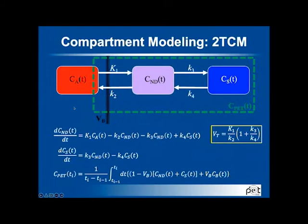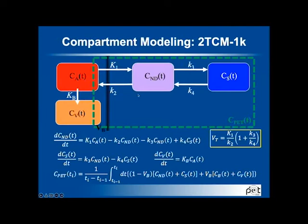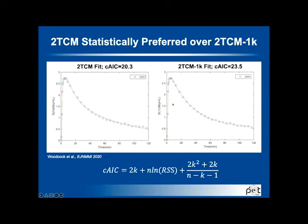Some groups have advocated for adding a further vascular compartment to account for endothelial expression of TSPO. We've done analyses with both the full two-tissue model and the two-tissue model with an extra compartment for irreversible uptake. Using statistical methods, we find that the simpler model is more statistically valid. Techniques vary across sites, and that may affect which model is preferred. But at the end of the day, measuring VT remains the ideal outcome measure.